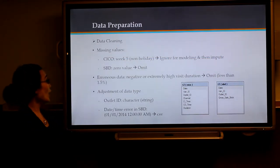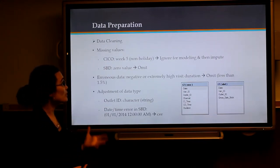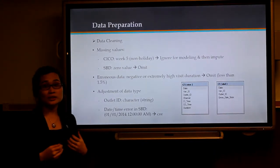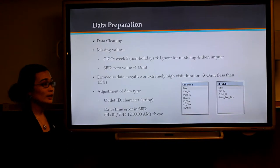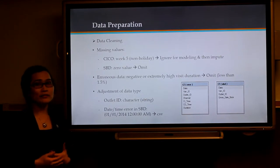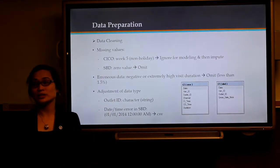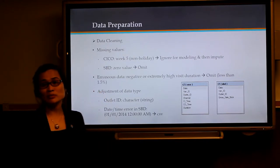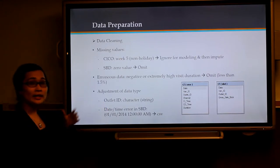For data cleaning, to deal with missing values, we decide to ignore the missing values in check-in and check-out files in week 5 because it's not a holiday week. We will compute it using the result from modeling. We also omit the zero values in the sale-by-date files. For some negative values or extremely high values in visit duration, which do not contribute very much in the total number of observations, we also omit it. We also do some assessment for data type in outlet ID and date and time.